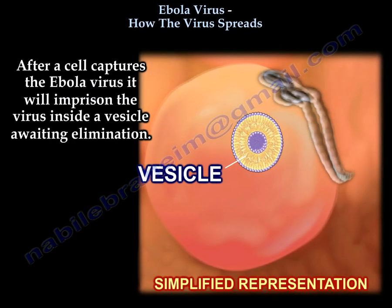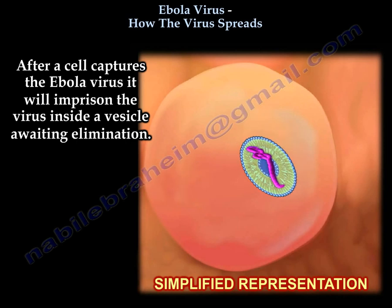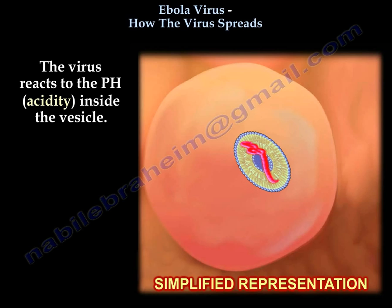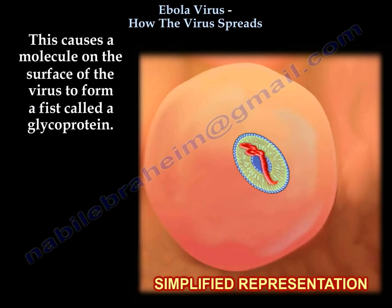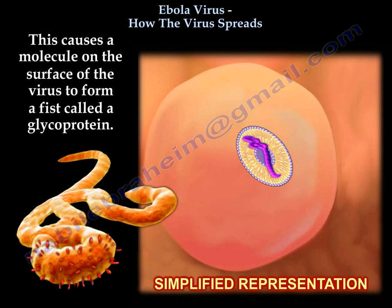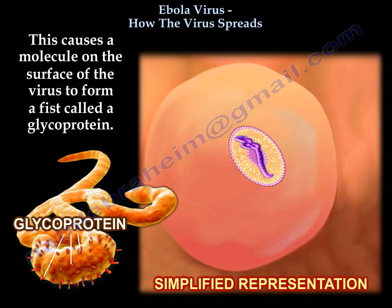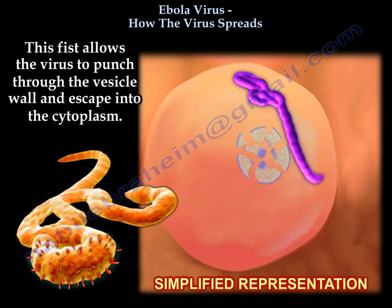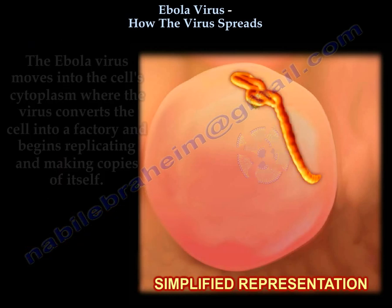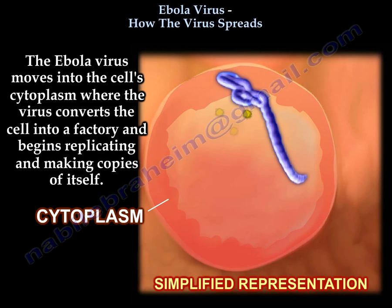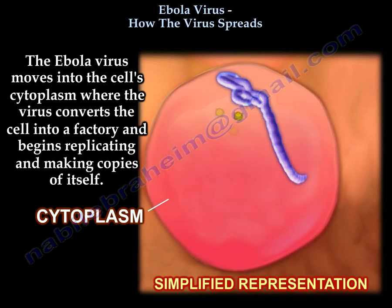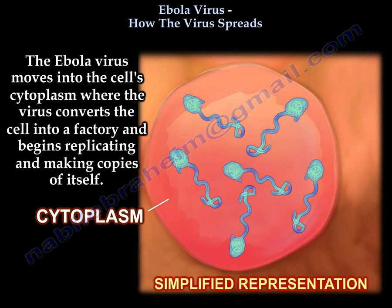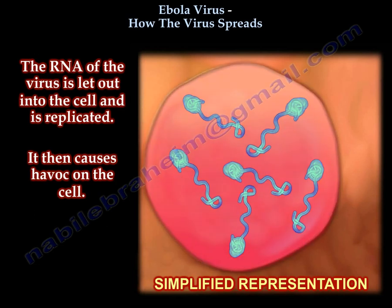After a cell captures the Ebola virus, it imprisons the virus inside a vesicle awaiting elimination. The virus reacts to the pH inside the vesicle, causing a molecule on the surface of the virus to form a fist-like structure called a glycoprotein. This fist allows the virus to punch through the vesicle wall and escape into the cytoplasm. The Ebola virus then moves into the cell's cytoplasm, converting the cell into a factory and replicating — the RNA of the virus is released into the cell, replicated, and causes havoc.